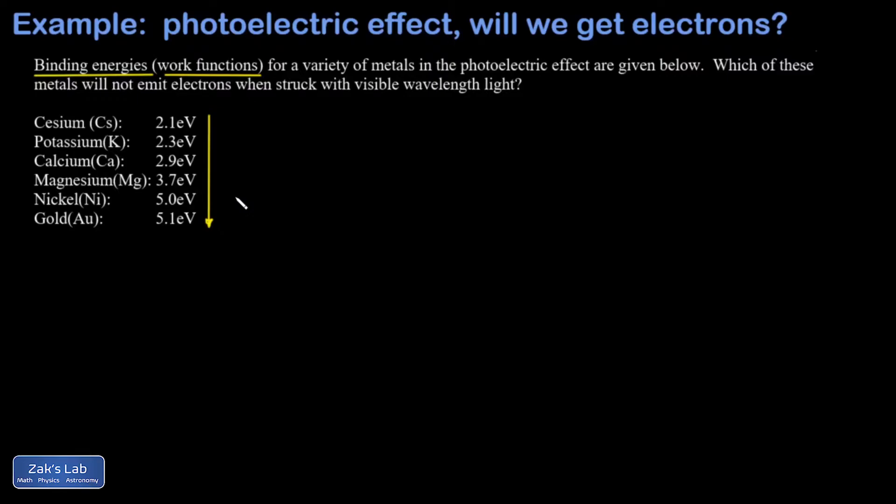The typical scenario in the photoelectric effect is that a photon hits an electron. If its energy is bigger than the binding energy, it'll pop the electron right off the piece of metal. All the leftover energy, anything in excess of the binding energy, will go into the kinetic energy of that electron.